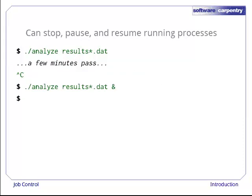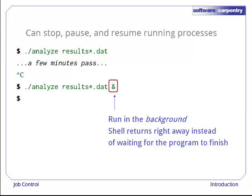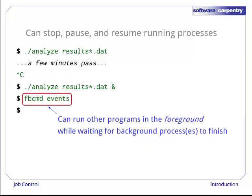Let's run that same command again, with an ampersand at the end of the line, to tell the shell we want it to run in the background. When we do this, the shell launches the program as before. Instead of leaving our keyboard and screen connected to the program's standard input and output, though, the shell hangs onto them. This means the shell can give us a fresh command prompt and start running other commands right away. Here, for example, we're checking for new Facebook events.